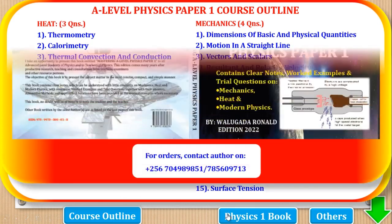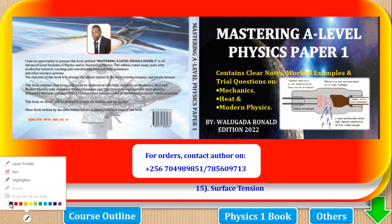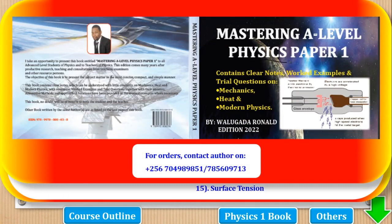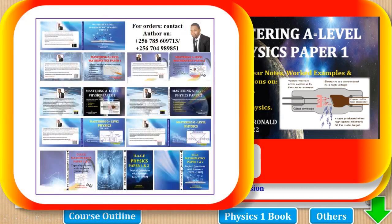Our interest is on calculations, but full notes can be found in the book 'Mastering A-Level Physics paper 1', where clear notes, worked examples, and trial questions are found for all topics. If you need a copy of this book, contact the author on any of the two contacts provided. A complete set of Physics has three books: Physics paper 1, Physics paper 2, and Physics Topical Question Bank.